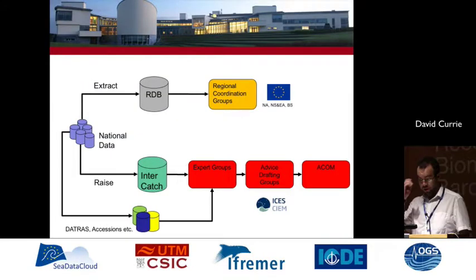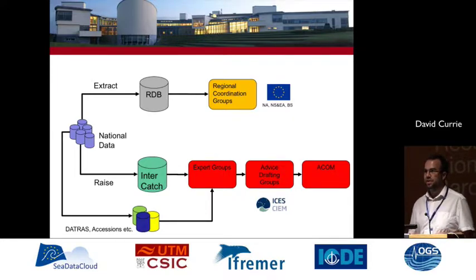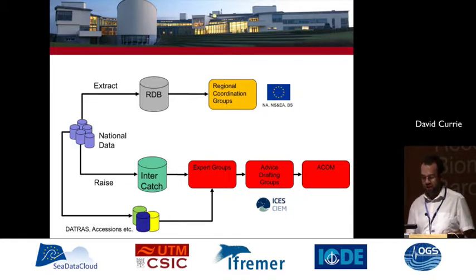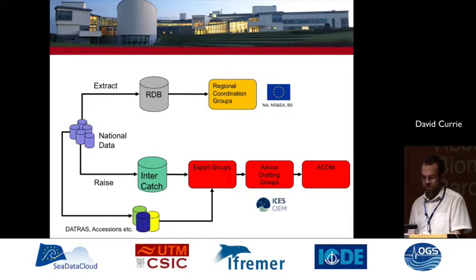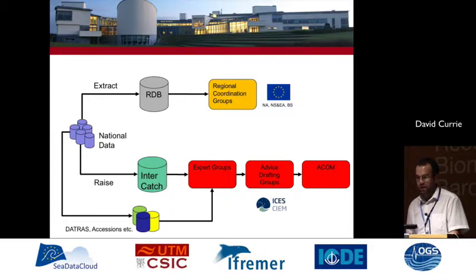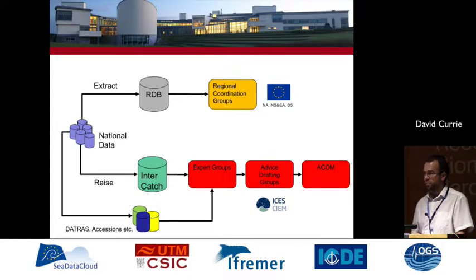Showing the existing system: on the left we have national data and national databases. There are two main routes for commercial fisheries data. The top route shows it going into the existing regional database through data extraction from each country's national database, and this is used by regional coordination groups — EU groups who coordinate commercial fisheries sampling activity, covering the North Atlantic, North Sea, and Baltic Sea.